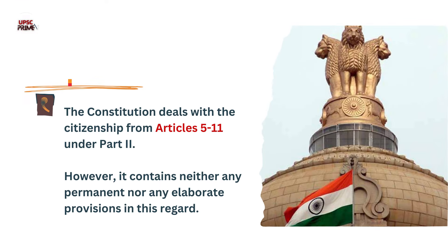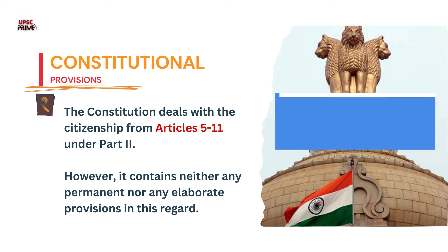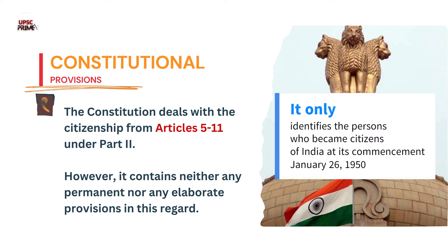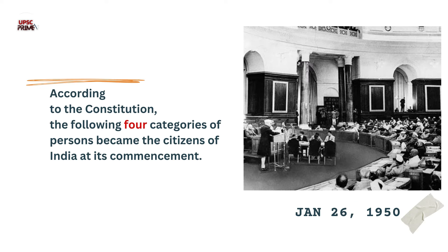The constitution deals with citizenship from Articles 5 to 11 under Part 2. However, it contains neither any permanent nor any elaborate provisions in this regard. It only identifies the persons who became citizens of India at its commencement, that is on January 26, 1950. According to the constitution, the following four categories of persons became citizens of India at its commencement.